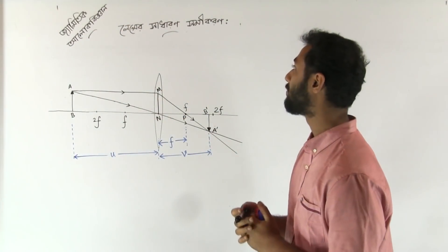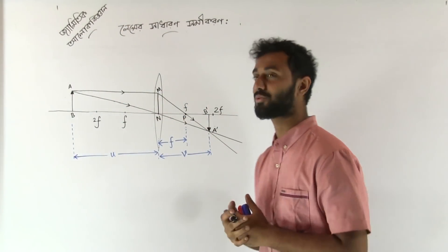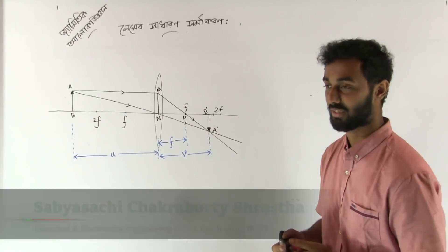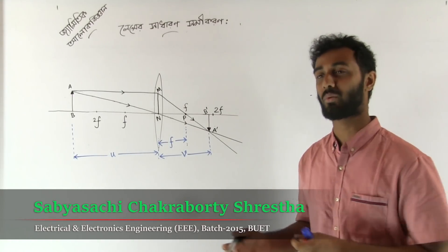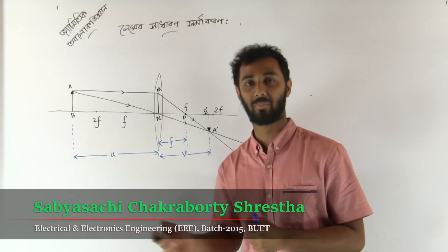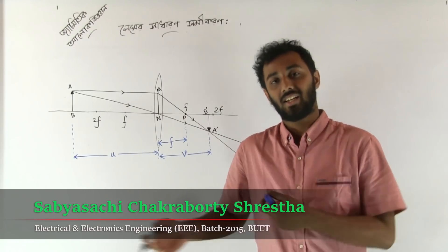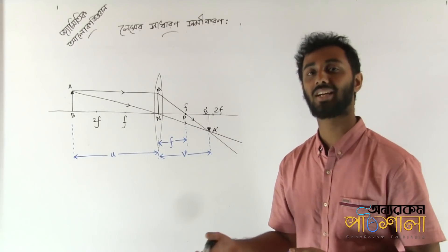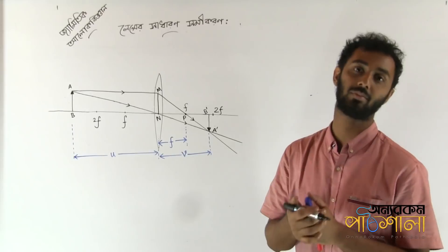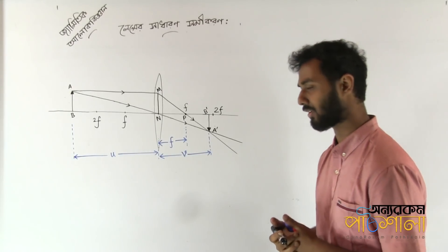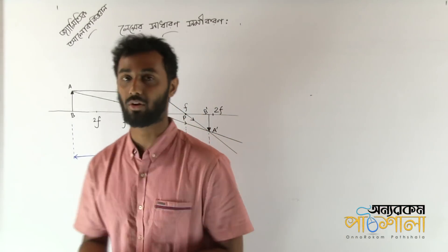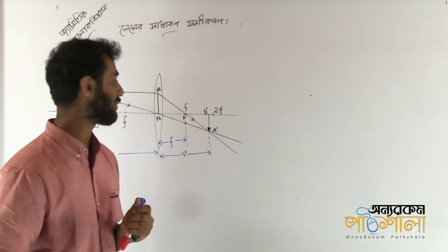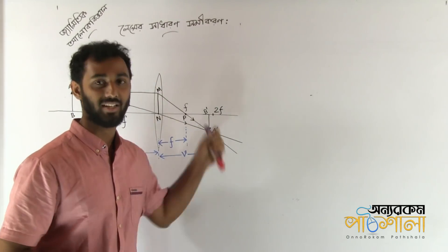Hello everyone, I am very excited to talk about this video. We are getting the lens formula: 1/u plus 1/v is equal to 1/f. We have many different forms that we already have. Most importantly, this topic will be taken from our first class, and students will be able to learn it from the first class.